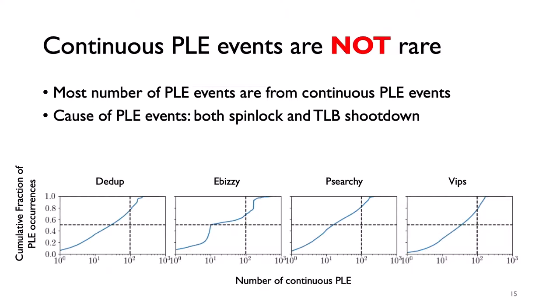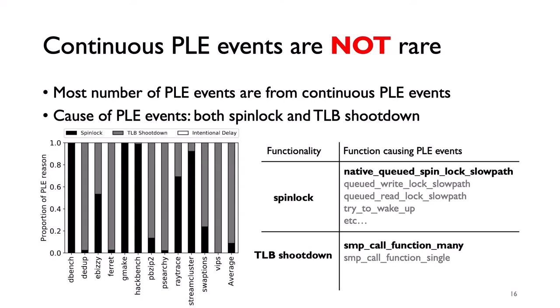So rescheduling vCPUs does not work as well as expected. The figure at the bottom shows the CDF of PLE occurrences on several benchmarks. In these experiments, two 8-vCPU VMs are running simultaneously on KVM. The benchmark under test is running in one VM and the CPU-bound benchmark swaptions is running in the other VM. This figure shows more than 100 continuous PLE events account for more than 20% of the total number of PLE events in these four benchmarks. The reasons for these PLE events are mainly two functions: native queued spinlock swappers and smp_call_function_many, meaning both spinlock and TLB shootdown are the cause of PLE events.